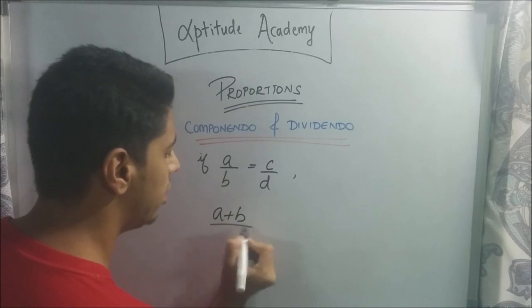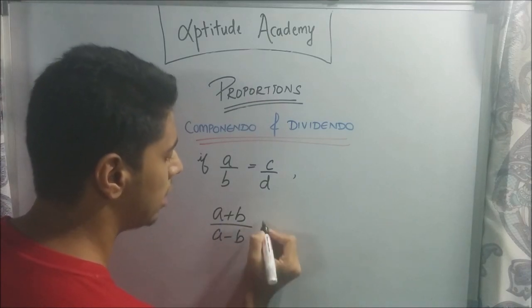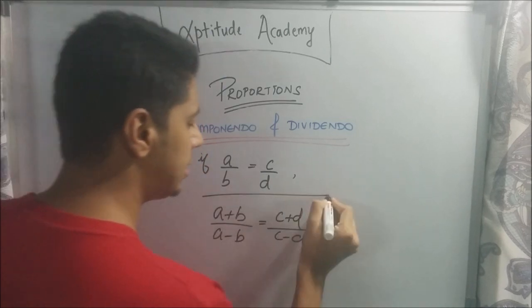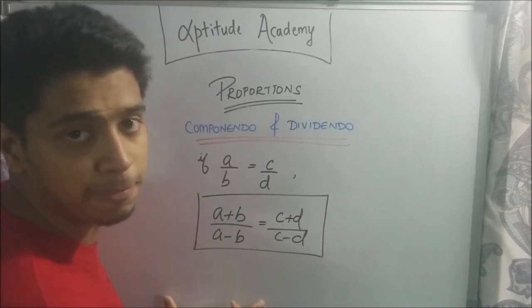A plus B divided by A minus B is equal to C plus D divided by C minus D. This is a very important formula that you need to remember.